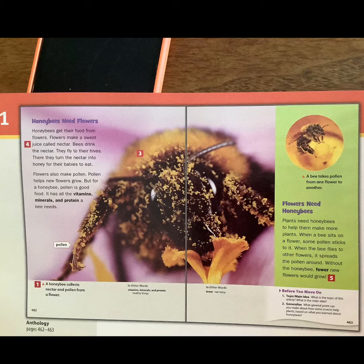In other words, vitamins, minerals, and protein are healthy things. And 'fewer' means not many. We have a little arrow pointing up at the picture telling us the caption of the circle: 'A bee takes pollen from one flower to another.' The caption of the main picture says: 'A honeybee collects nectar and pollen from a flower.'